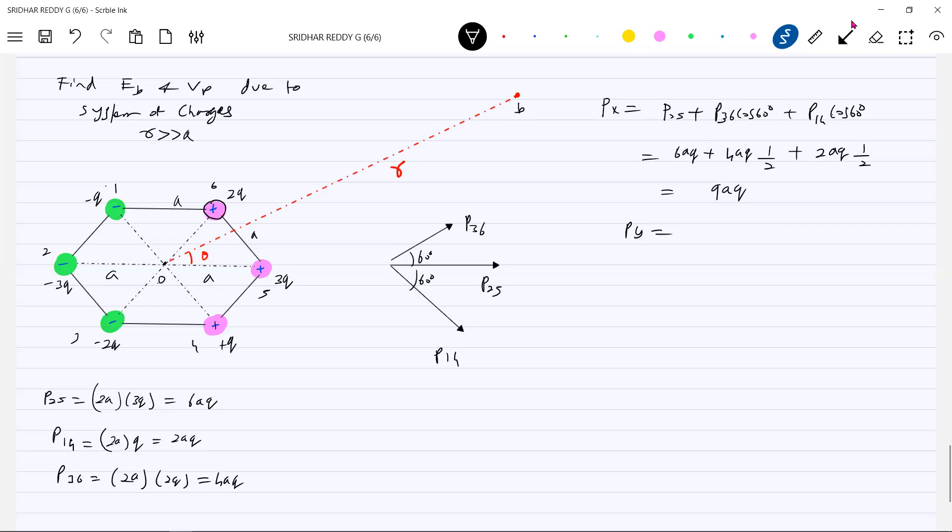Similarly, Y component of dipole moment should be P one four sine 60 minus P three six sine 60. P one four is 2AQ root three by two, P three six will be 4AQ root three by two. This will become minus AQ root three. Let's assume P equals AQ. So this will become 9P and this will become minus P root three.